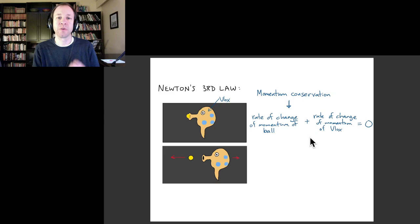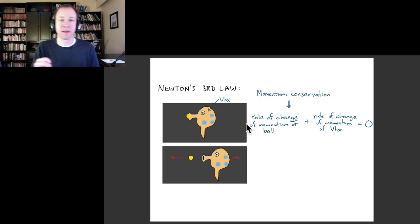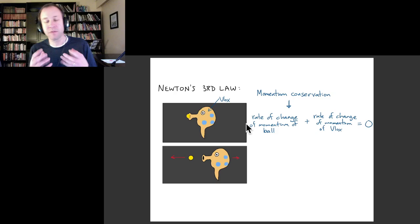Okay, so in terms of momentum conservation, we can say that as Vlocks is spitting out the ball, the rate of change of the momentum of the ball must be opposite to the rate of change of the momentum of Vlocks, because momentum needs to stay the same, needs to stay zero at all times. Because these rates of change of momentum are exactly the forces.